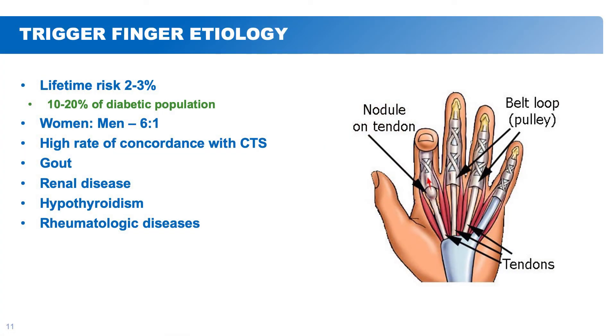What causes trigger fingers? There's a lifetime risk of two to three percent for the general population. Diabetic patients have a higher incidence — some reports suggest up to 20 percent of the diabetic population will experience trigger fingers. Women are six times more likely than men to experience trigger fingers. There is also a high concordance of having carpal tunnel syndrome along with trigger fingers. Gout, renal disease, hypothyroidism, and rheumatologic diseases are also associated. Anything that places more stress, inflammation, or deposits substances around the tendons can cause trigger fingers.